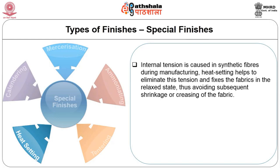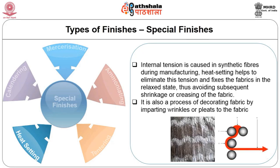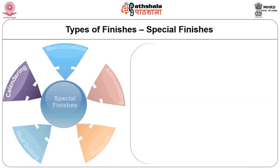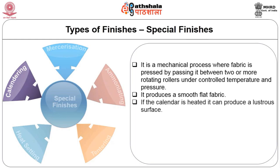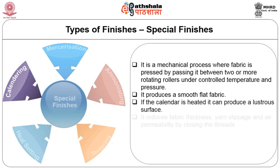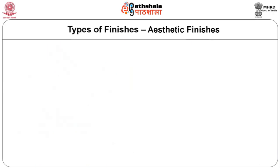Heat setting helps to eliminate internal tension caused in synthetic fibers during manufacturing, fixing the fabric in a relaxed state and avoiding subsequent shrinkage or creasing. It is also a process of decorating the fabric by imparting wrinkles or pleats. Calendaring is a mechanical process where fabric is pressed between two or more rotating rollers under controlled temperature and pressure, producing a smooth flat fabric with lustre surface, reducing fabric thickness, yarn slippage and air permeability.